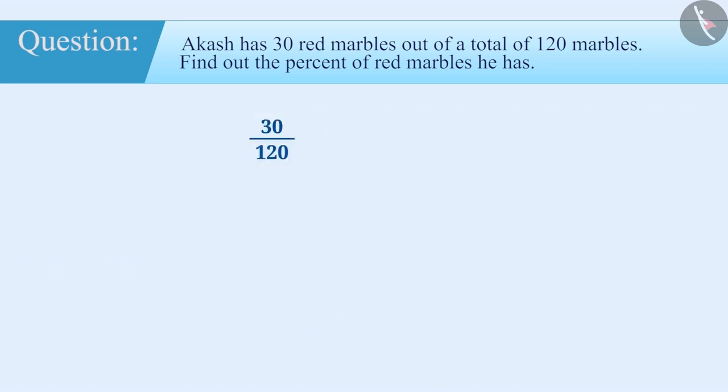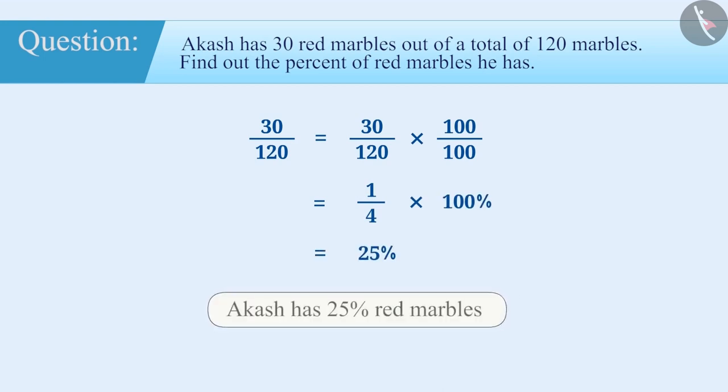To find out, we will multiply 30 by 120 with 100 by 100. Since the numerator and denominator is being multiplied by the same number, there is no change in the value of the fraction 30 by 120. 30 by 120 into 100 by 100 is equal to 1 by 4 into 100%, which is equal to 25%. In this way, Akash has 25% red marbles.